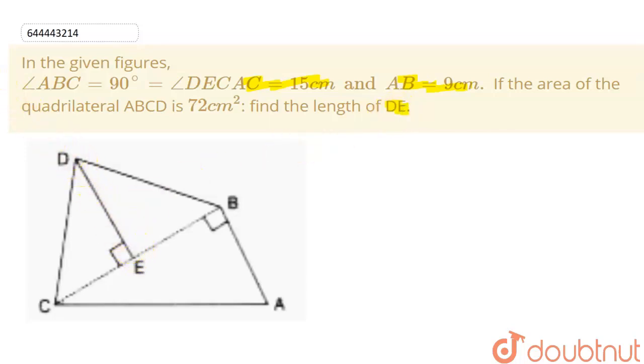So let's start the solution. To calculate this DE I have to get this BC first and how I can get this BC by Pythagorean theorem. As this is a right angle triangle ABC I can use my Pythagorean theorem. And this angle is 90 degrees given to us, so AC will be our hypotenuse. So by Pythagorean theorem I can write that AC square will be equal to AB square plus BC square. And this AC is given to us as 15.